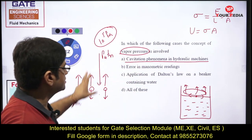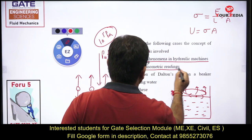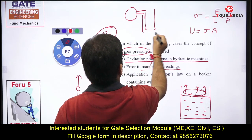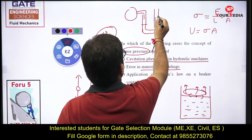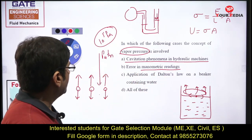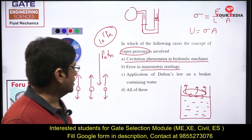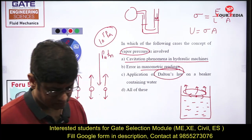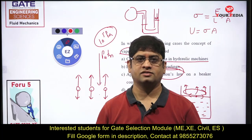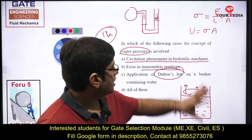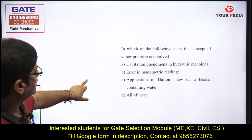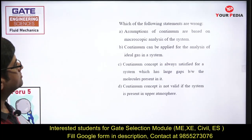Vapor pressure, boiling, and cavitation are related. By Dalton's law of partial pressures, total pressure at a point equals the sum of partial pressures of all gases present, including vapors. So vapor pressure contributes to total pressure. Manometer error arises because vapors in the tube also exert pressure, and that adds to the reading.